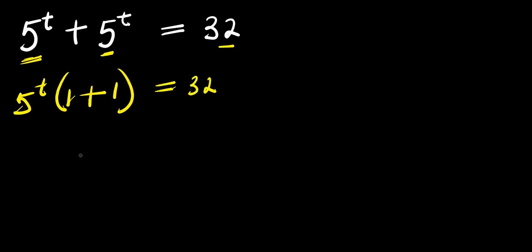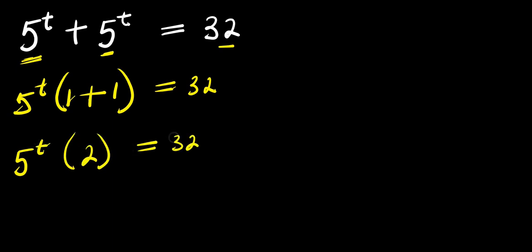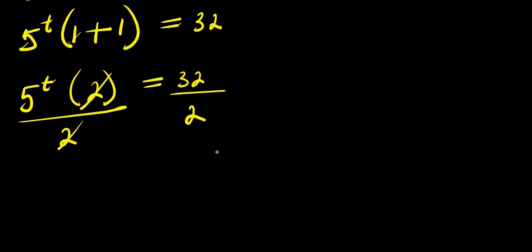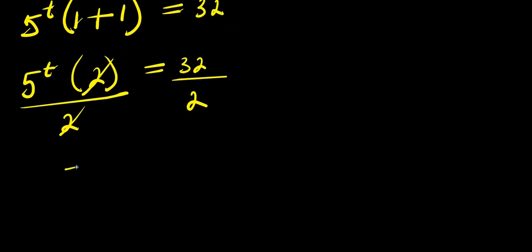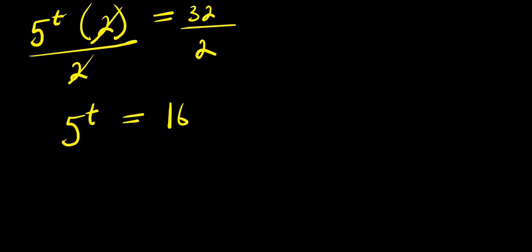This equals 32, so from here I have 5 power t times 1 plus 1, that is 2, and this equals 32. So I divide both sides by 2 — 2 eliminates 2 — so from here I have 5 to the power of t equals 16, because 32 divided by 2 is 16. I can then apply log.